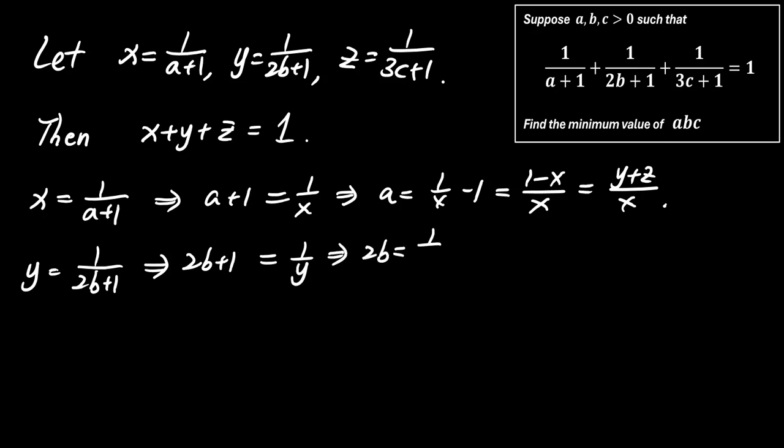Similarly, from Y equal to 1 divided by 2B plus 1, we get 2B equals 1 minus Y divided by Y, which simplifies to X plus Z divided by Y.